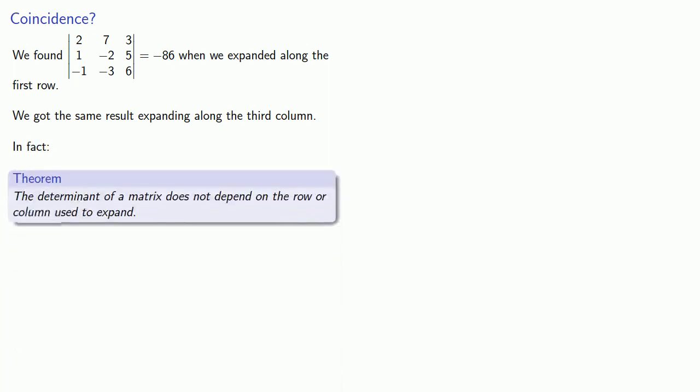And so notice that we found this determinant to be negative 86 when we expanded along the first row. But we got the same result expanding along the third column. And in fact, this is no coincidence. This is an example of a general theorem that says the determinant of a matrix does not depend on the row or column used to expand.